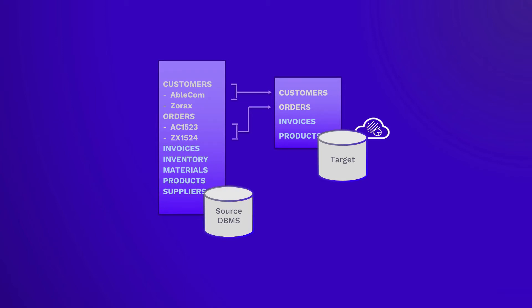Synity Data Replication uses change data capture to identify just new or changed data on the source system. It then passes the data to the target using a minimum of resources and processing.